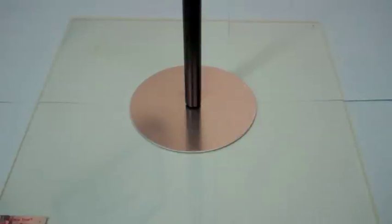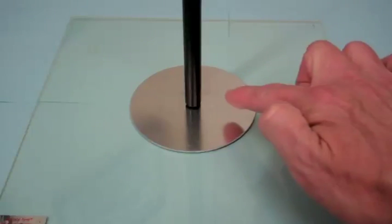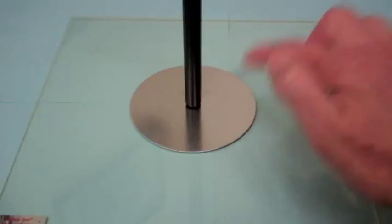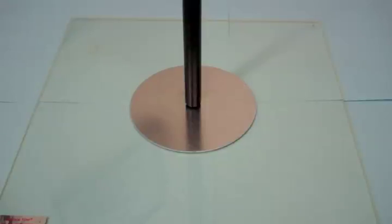And what I can do now is touch the top here and I will give a path for the electrons on the top surface to go to ground, and what will remain is the positive charge on the bottom of the plate.